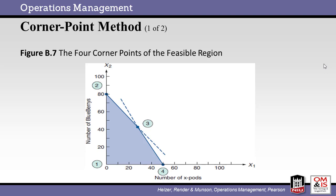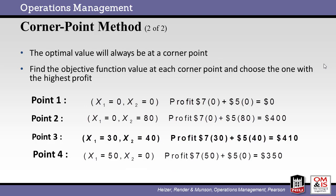Another graphical approach is the four corner points method. We start by identifying the four corners of the feasible solution region. These points are shown here marked as 1, 2, 3, and 4. This method states that the optimal solution will be found at one of the four corner points identified. We calculate the profit at each point and find that the values of x1 and x2 at point 3 generate the most profit. Thus, this point (30, 40) is the answer. Again, we see that our maximum profit is $410.